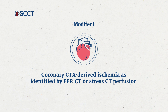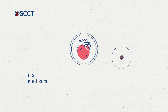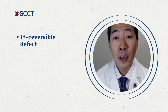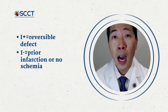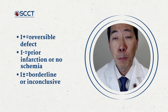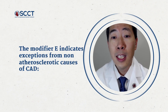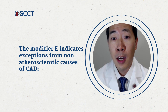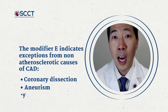In addition, the 2022 CADRADs 2.0 adds a modifier for CTA-derived ischemia with the capital I, as identified by either CT-FFR or stress CT perfusion. I-plus indicates a reversible defect, I-minus indicates prior infarction or no ischemia, and I-plus/minus indicates borderline or inconclusive. Lastly, the modifier E indicates exceptions from non-atherosclerotic causes of coronary disease, such as coronary dissection, aneurysm, or anomaly.